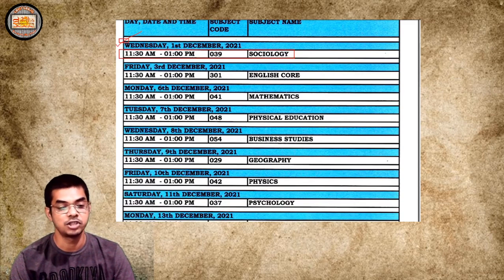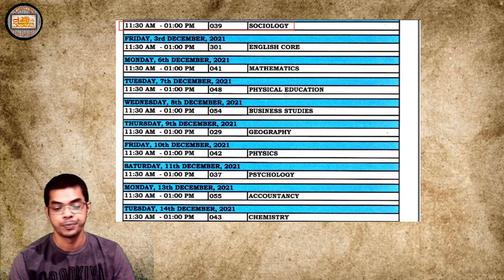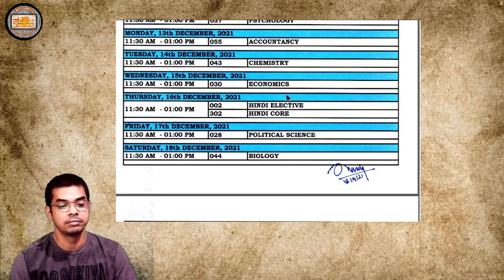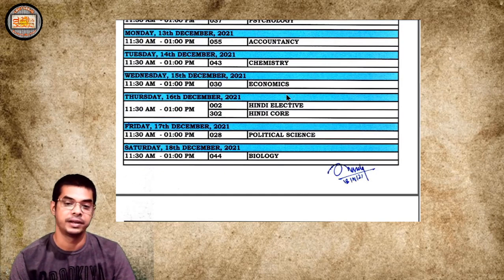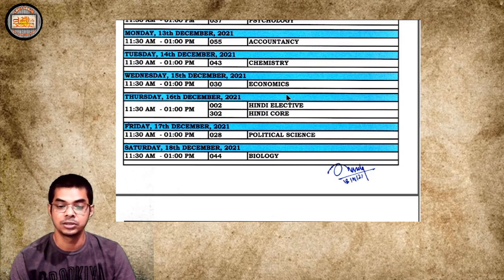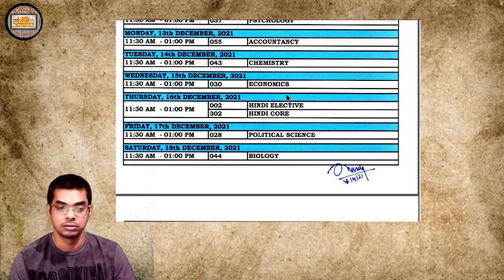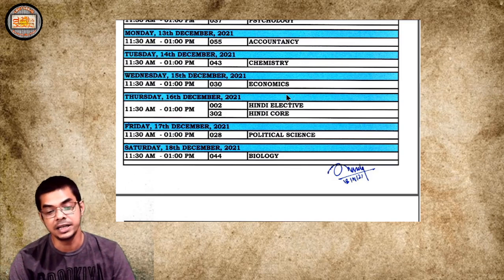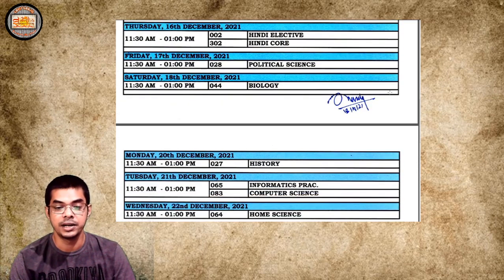The time is 11:30 AM to 1:00 PM, and if we check the list, for each and every subject the time will remain the same — 11:30 to 1:00 PM. You'll get this list in our Telegram channel, where I'll post it. It will also be available on the Shiksha Mantra Facebook page and our Shiksha Mantra English Grammar Instagram channel. All links will be in the description below.